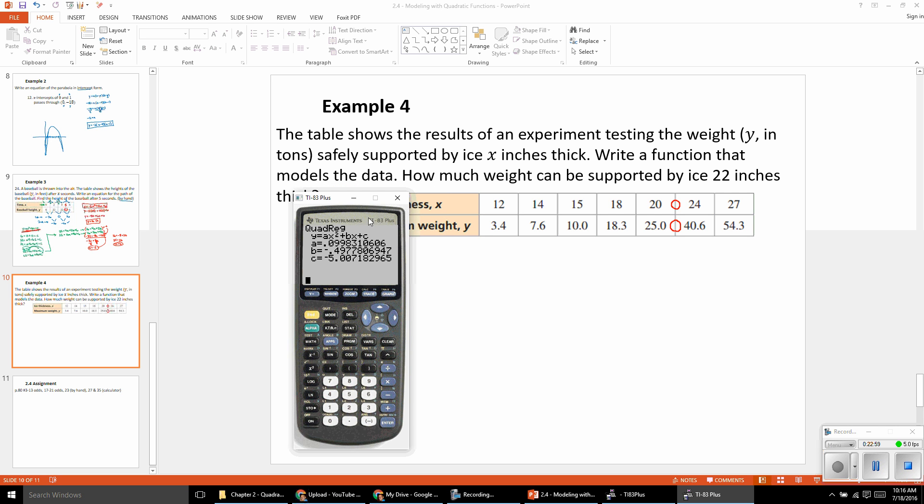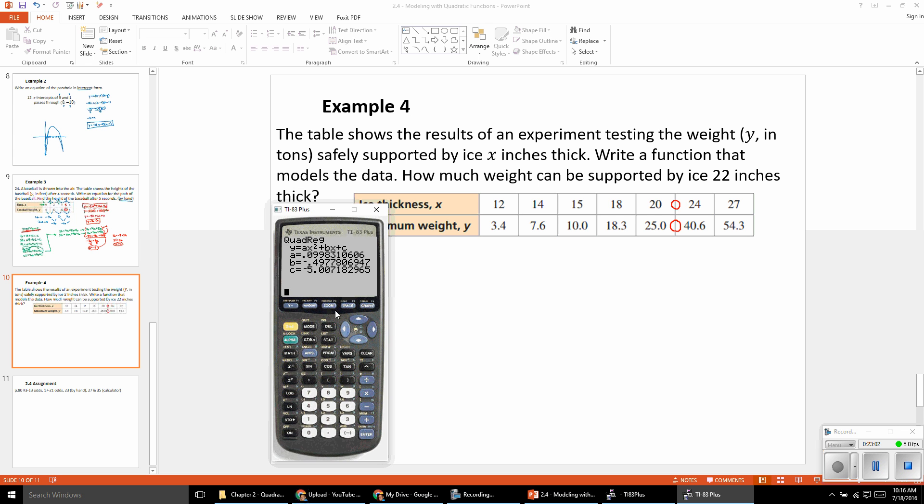And now, most of this work is going to be done on the calculator. So now, in our y equals menu, we're going to go vars, option five is statistics, and go over to equations, and choose our regression equation. And it types that in without any rounding whatsoever. And then we'll hit graph one more time. This will include our points and the function that we put in. And you can see, we definitely needed a parabola to fit those points very well. That looks like a nice regression equation.